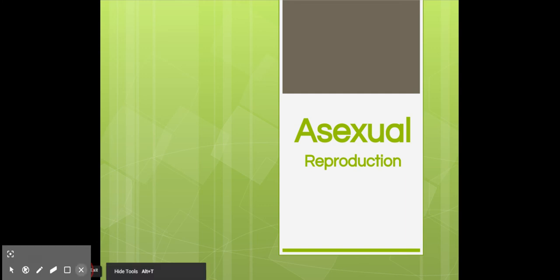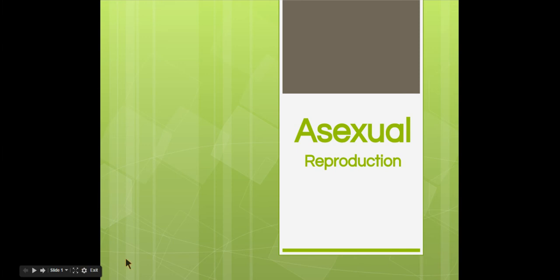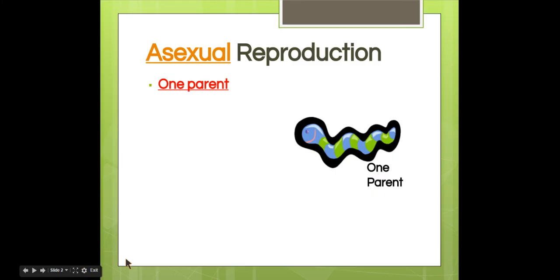Let's discuss asexual reproduction. The key characteristic of asexual reproduction is that it involves just one parent, not two.